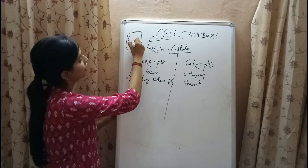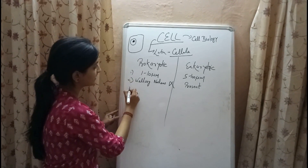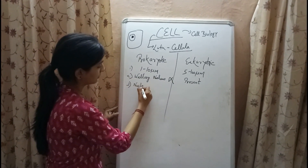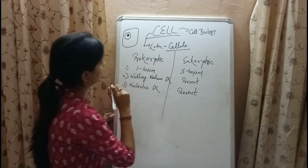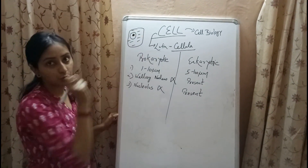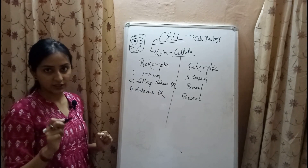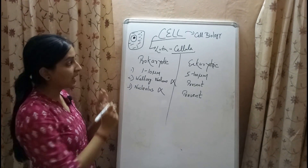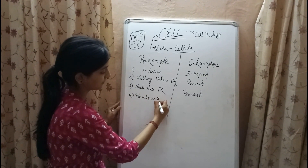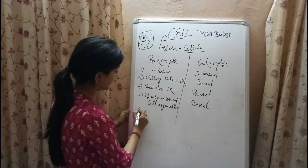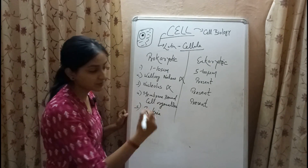Inside the nucleus there is one more important structure called the nucleolus, which is absent in prokaryotic cells but present in eukaryotic cells. The cytoplasm consists of various sub-microscopic structures called cell organelles. Membrane-bound cell organelles are absent in prokaryotic cells but present in eukaryotic cells. Prokaryotic cells are found in bacteria, while eukaryotic cells are found in higher organisms like plants and animals.